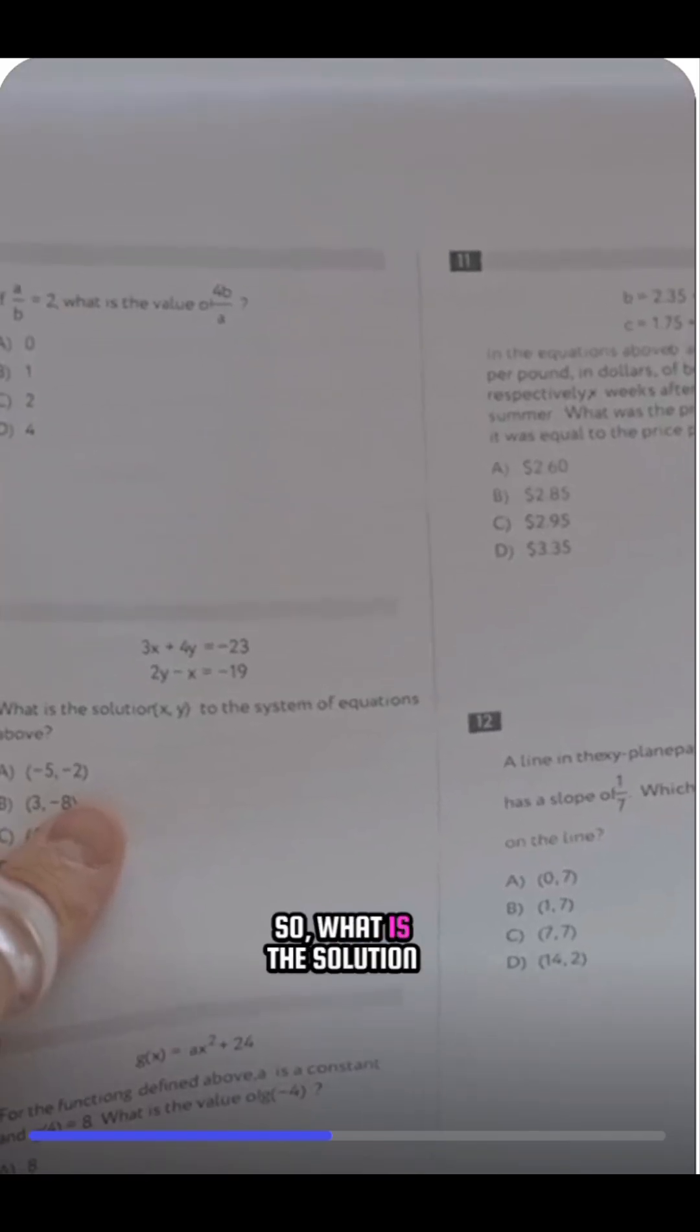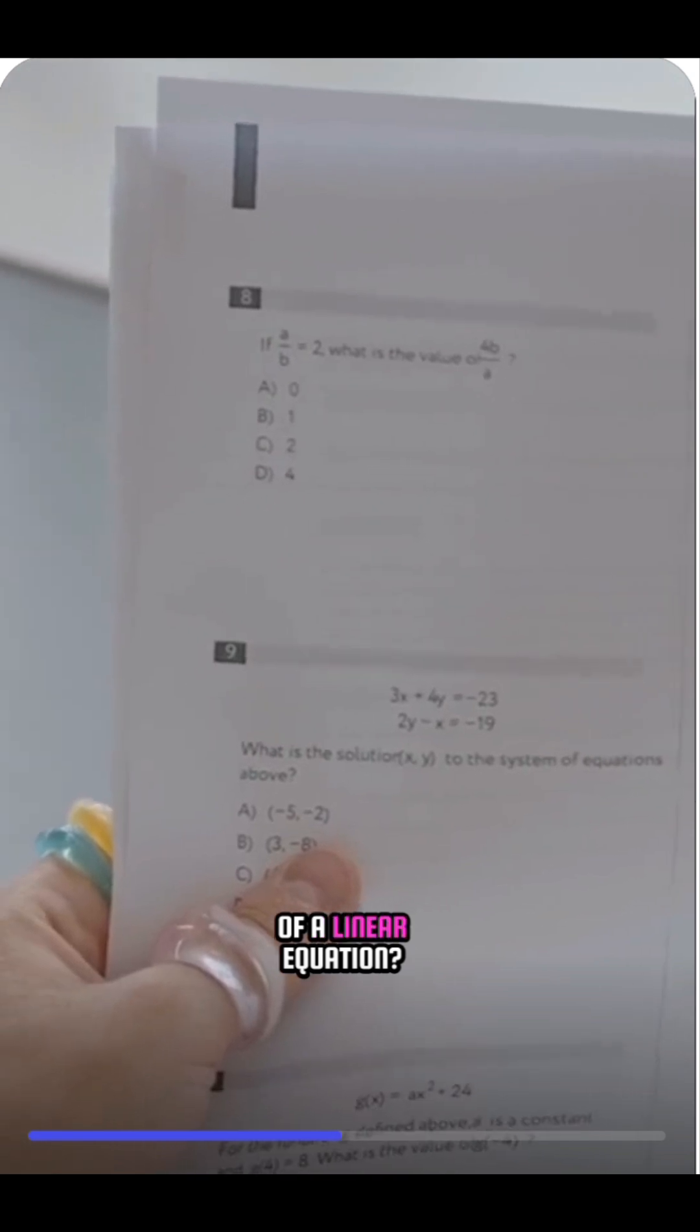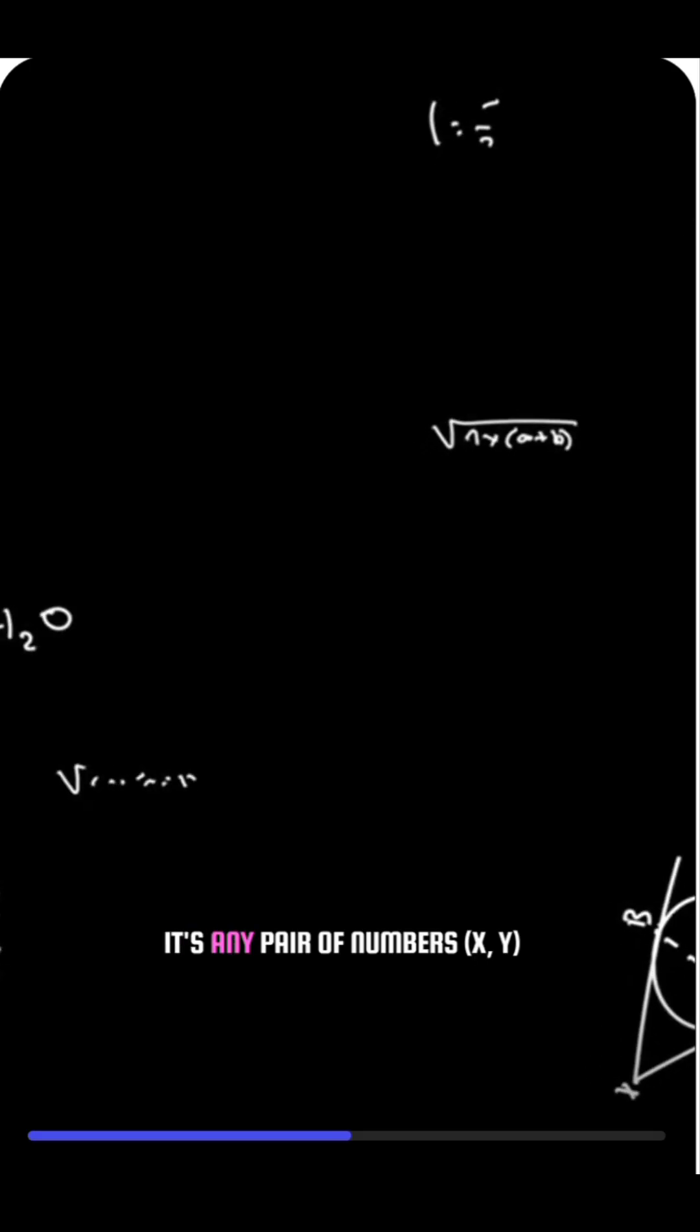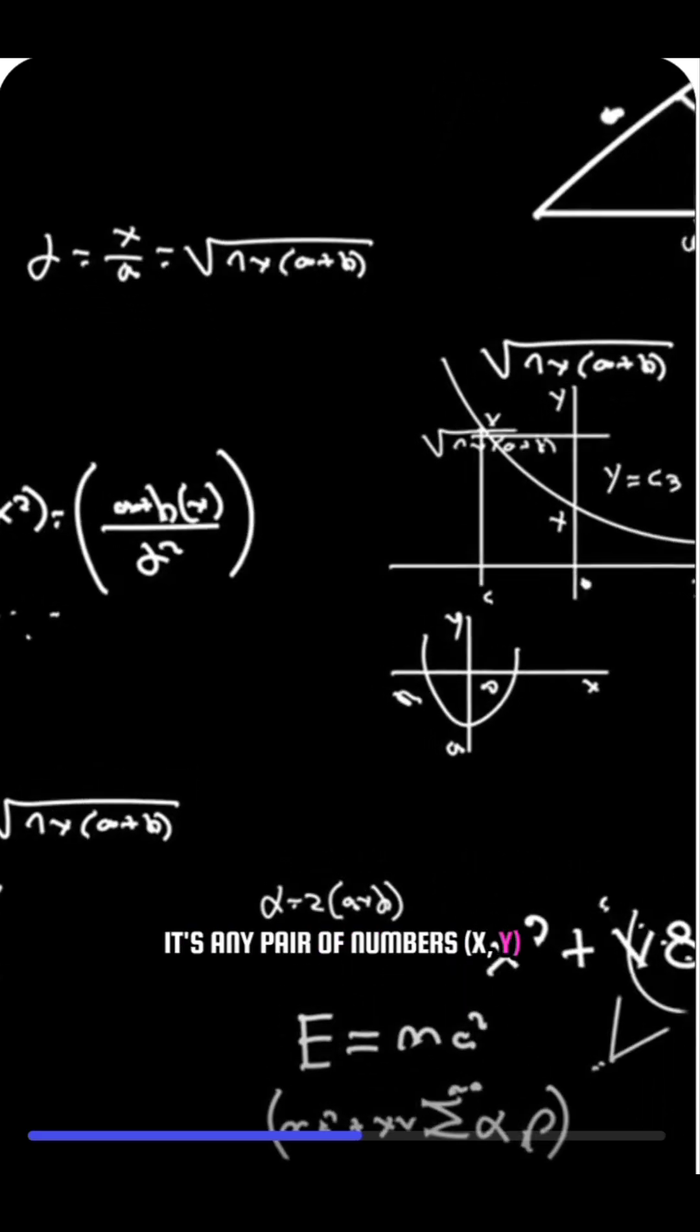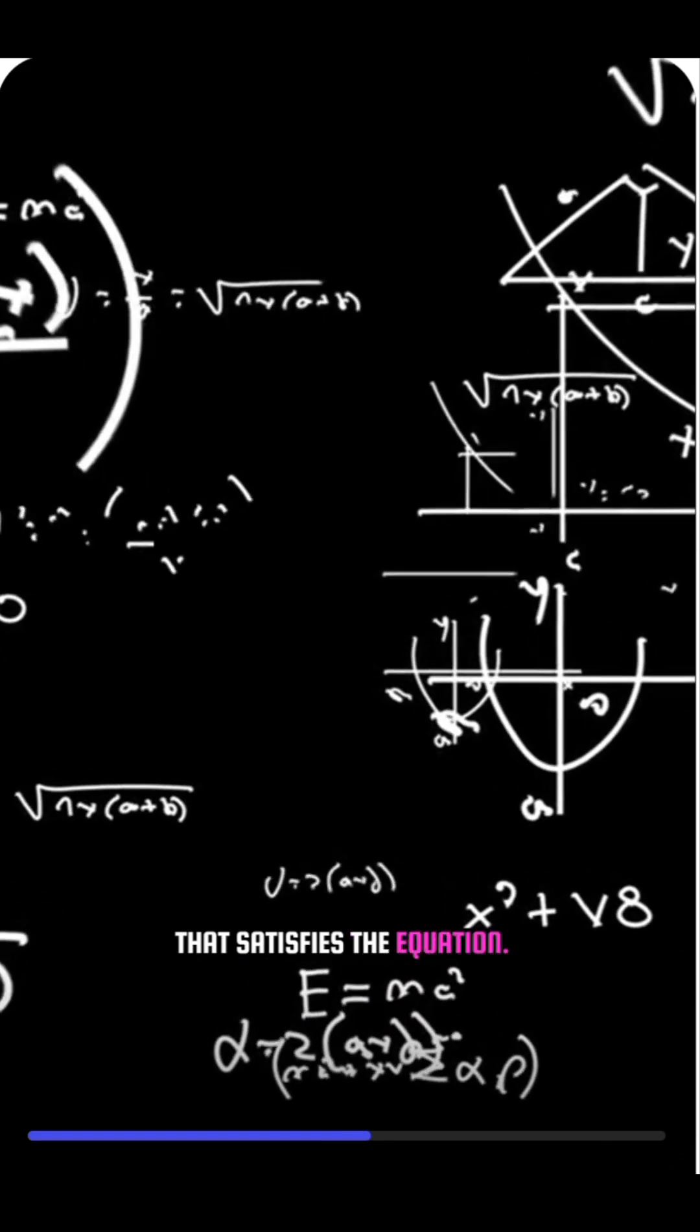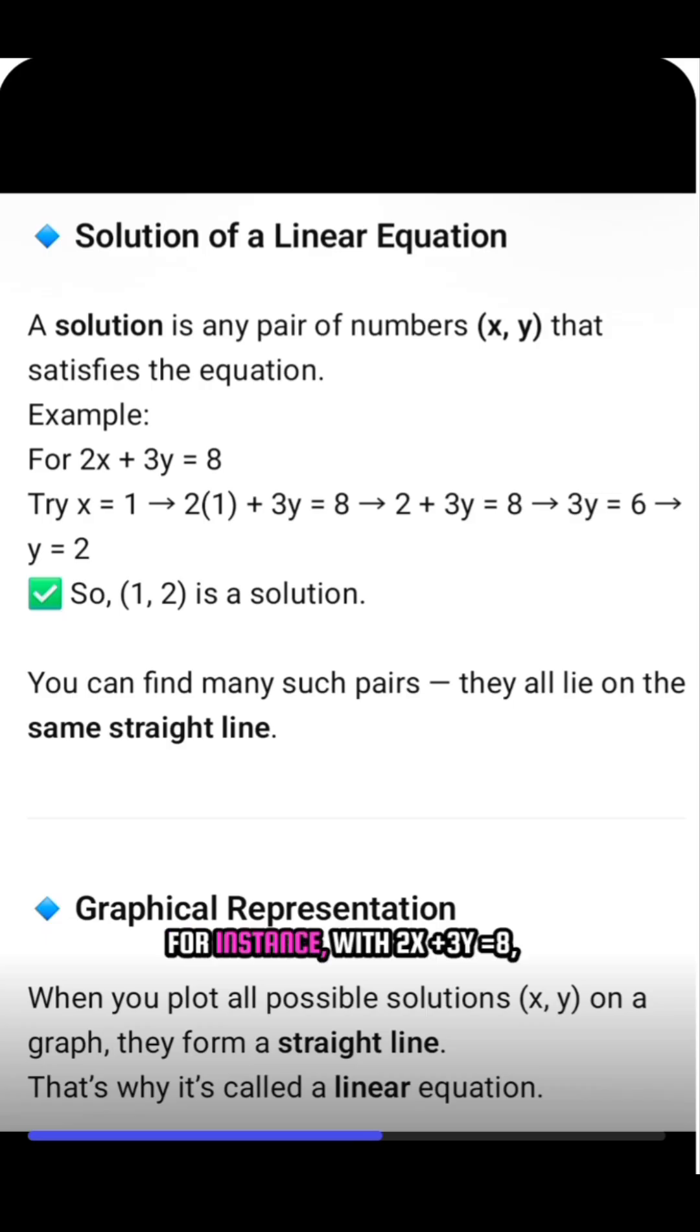So, what is the solution of a linear equation? It's any pair of numbers, x and y, that satisfies the equation. For instance, with 2x plus 3y equals 8, if x is 1, what's y? You'd find that y equals 2, making (1, 2) a solution.